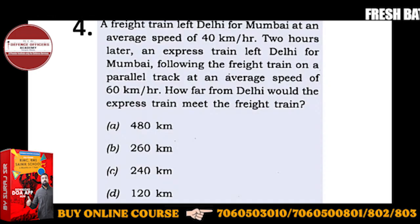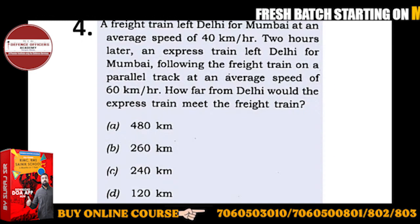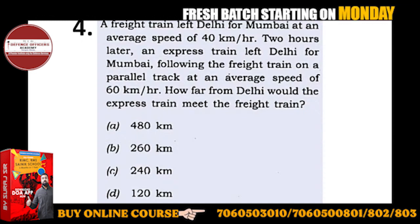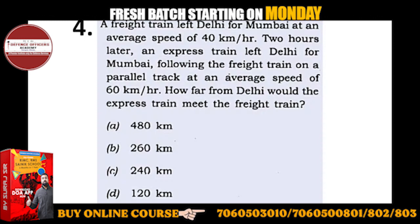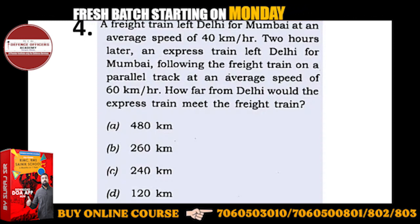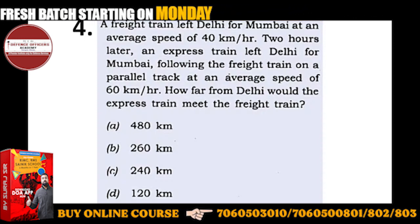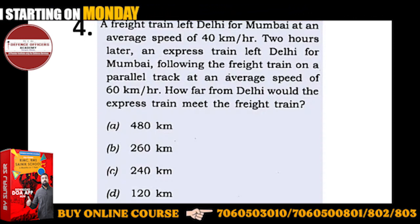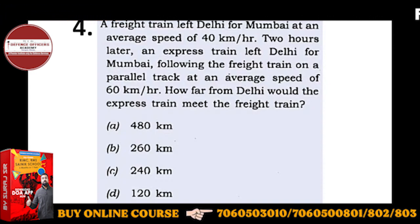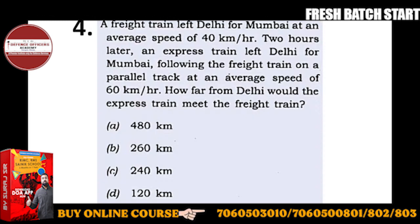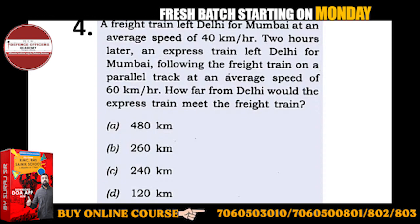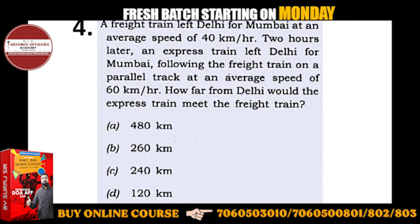A freight train left Delhi for Mumbai at an average speed of 40 km per hour. Two hours later, an express train left Delhi for Mumbai on a parallel track at an average speed of 60 km per hour. The question asks: how far from Delhi would the express train meet the freight train? Four options are given: 240, 160, 120, and 80.